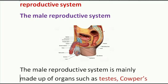On your screen you are seeing a diagram of the male reproductive system. This structure you see here is very common — all males have it. It has a name: it is called the penis, and it forms part of the male reproductive system.